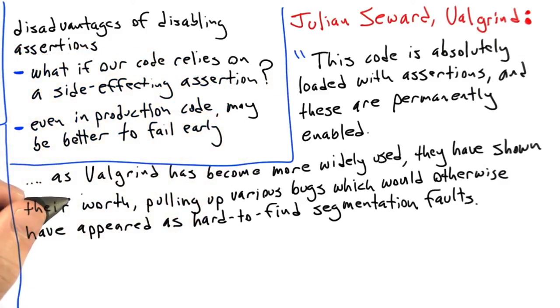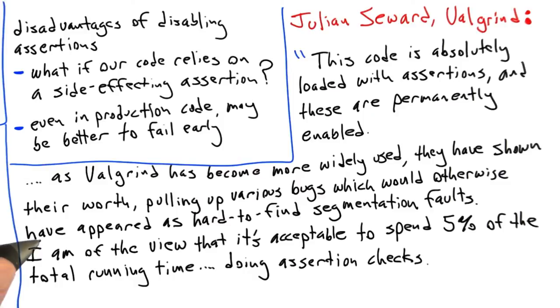As Valgrind has become more widely used, they have shown their worth pulling up various bugs which would otherwise have appeared as hard to find segmentation faults. I am of the view that it's acceptable to spend 5% of the total running time doing assertion checks.